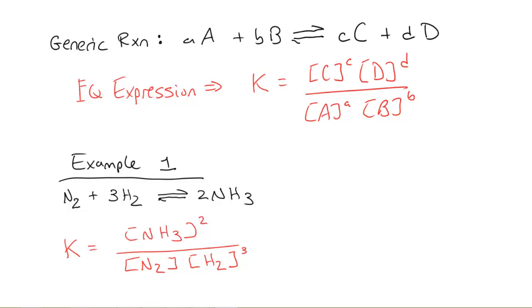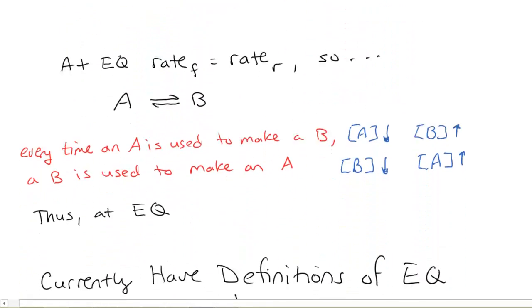So, as you see, the equilibrium constant is the concentration of ammonia squared, divided by the concentration of our diatomic nitrogen, and divided by our concentration of our diatomic hydrogen, all cubed.